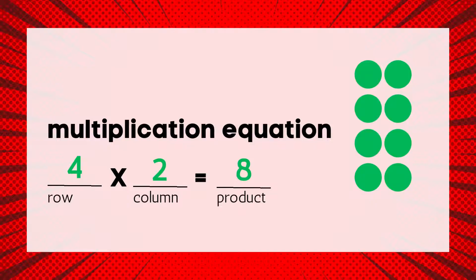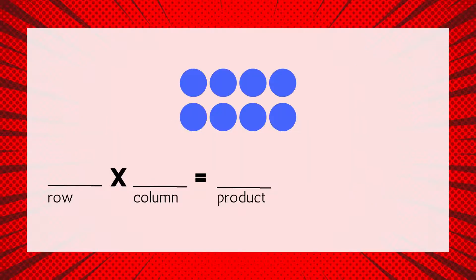Let's try another. How many rows are in this array? I see two rows. How many columns are there? I see four columns. How many circles are there in all? We can count by fours: four, eight. There are eight circles in all — that's our product.